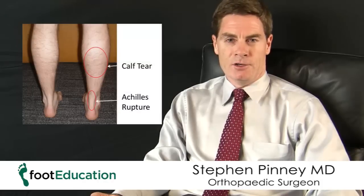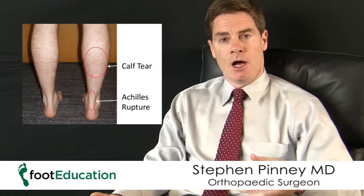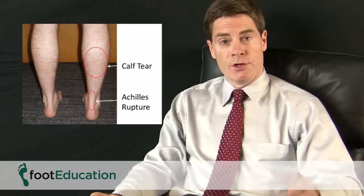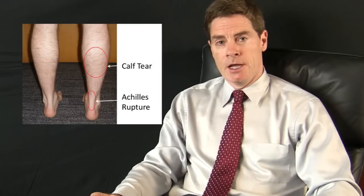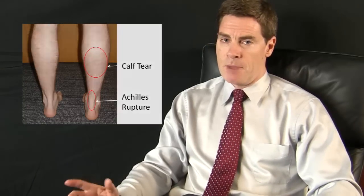How is a calf tear different than an Achilles tendon rupture? They both have very similar mechanisms — a sudden change of direction — and tend to occur in athletes, particularly those in their middle age. The main difference is the location of the injury. The calf tear occurs in the calf muscle, which is higher up and closer to the knee joint, whereas the Achilles is down towards the heel.